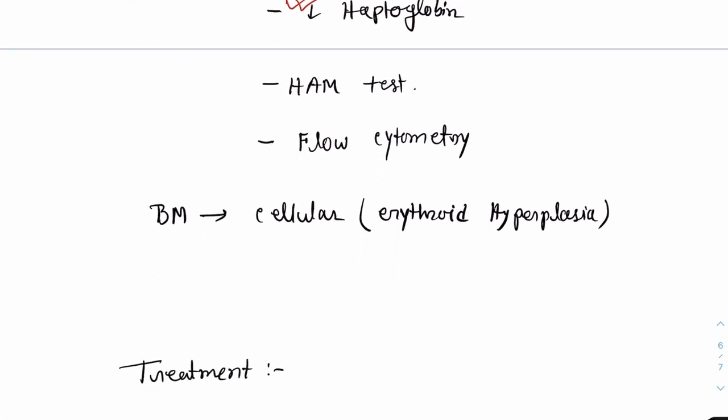HAM test is a very important and very reliable test which can diagnose the disease but it is rarely done in laboratories. The gold standard or the most important diagnostic method is flow cytometry. Flow cytometry detects the absence of CD55 and CD59 on the surface of the RBCs.